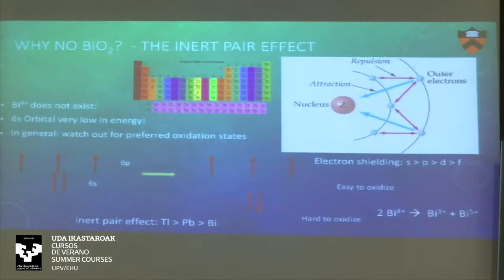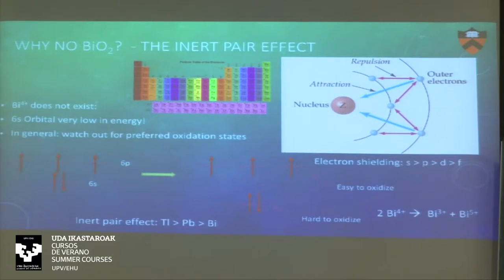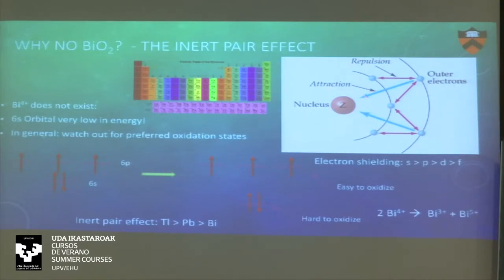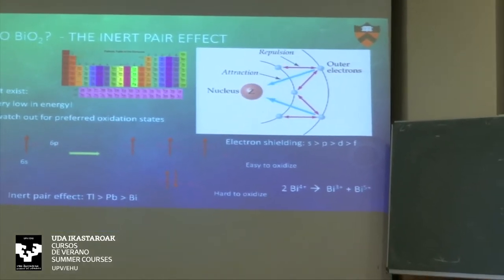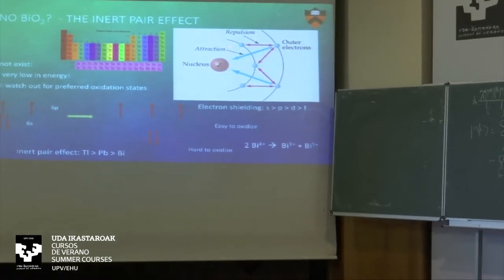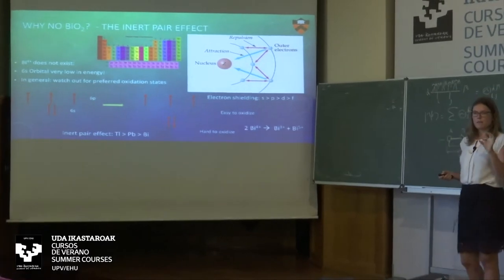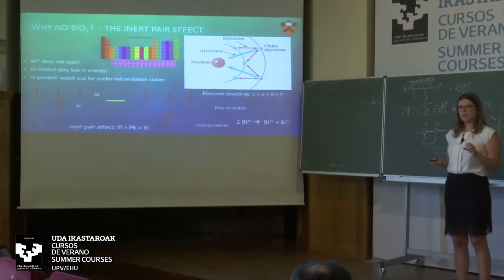Why is there no bismuth 4+ listed in databases? This is the so-called inert pair effect — a very famous effect in chemistry, also crucial for most topological materials to exist. Chemists describe it intuitively: a nucleus has positive charge, electrons have negative charge and cycle around it. The reason the electron cloud is large is that electrons shield each other from the nuclear charge. S-electrons do a really good job of shielding, P-electrons less so, D-electrons even worse, and F-electrons really don't shield at all.